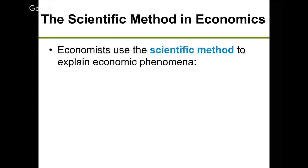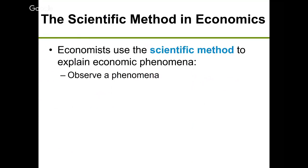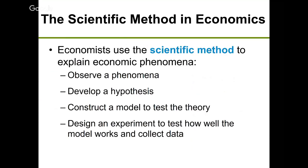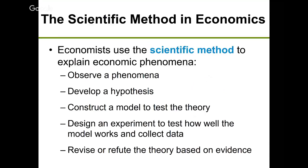So what is economics? Economics is about the study of how society deals with limited resources. Economics is a social science, and to make a science we use the scientific method to explain economic phenomena — observing, developing a hypothesis or model, and designing experiments to test how well the model works, then revising or refuting the theory based on evidence.